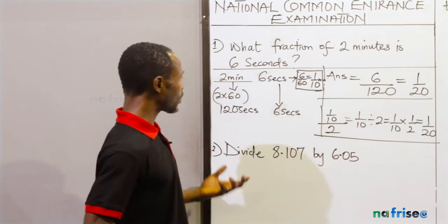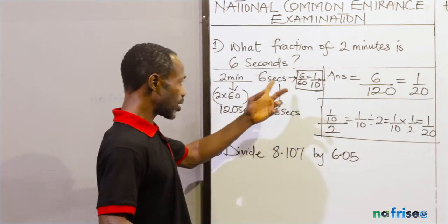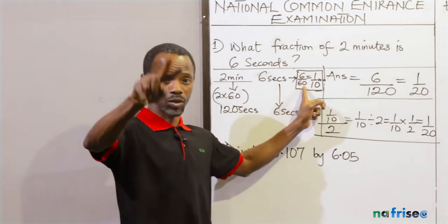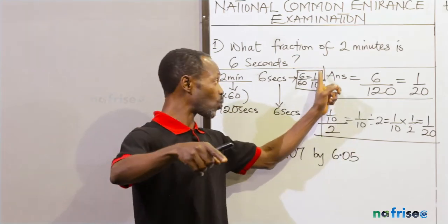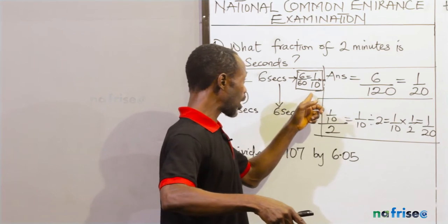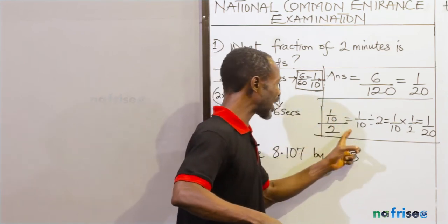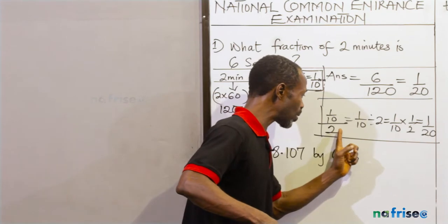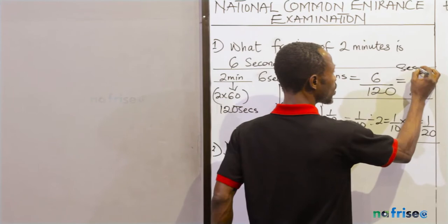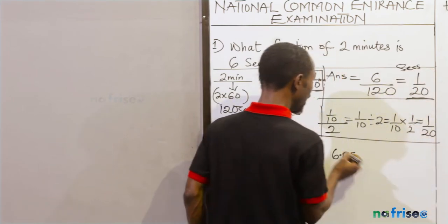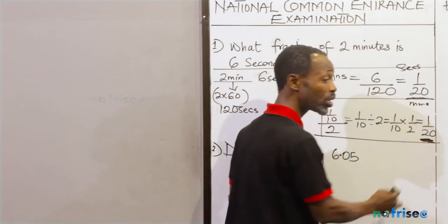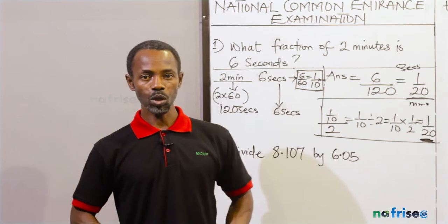But in the case where they are all in minutes already, which is not in minutes, 6 seconds in minutes becomes 6 over 60. I'm teaching you how to change seconds to minutes here. 6 seconds in minutes is 1 over 10 minutes. So the 1 over 10, which is still the same as 6 seconds, I now carried the 1 over 10 and divided it by 2, the bigger one, which is 2 minutes. So make sure they are the same. All right. So that's for question number one.